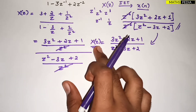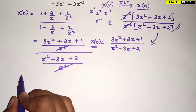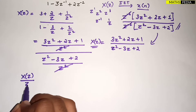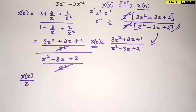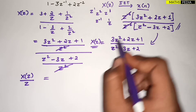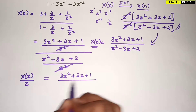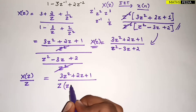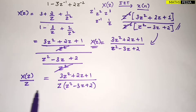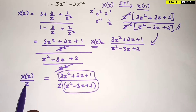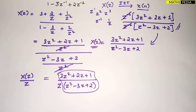After simplifying X(z), the second step is to divide the whole thing by z. So you compute X(z)/z. When you divide by z, one more z comes in the denominator, giving (3z² + 2z + 1) divided by z(z² − 3z + 2). Do not divide numerator and denominator separately by z — divide the entire X(z) by z so it goes into the denominator part.